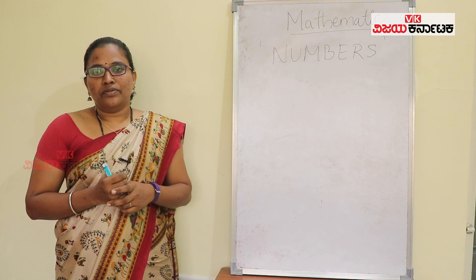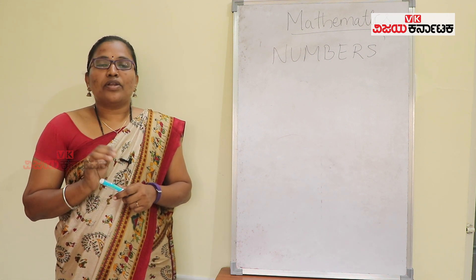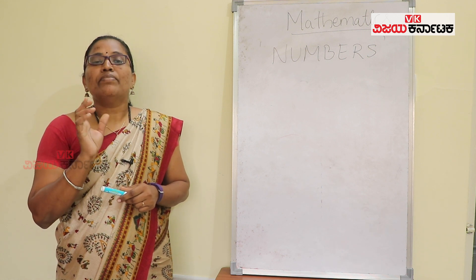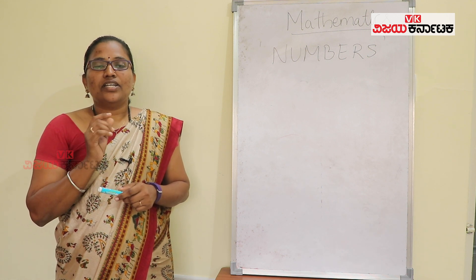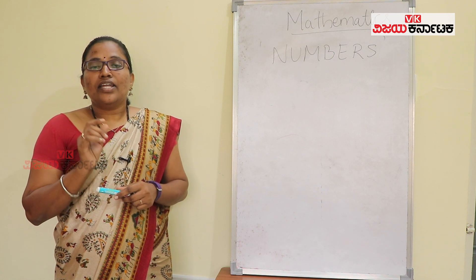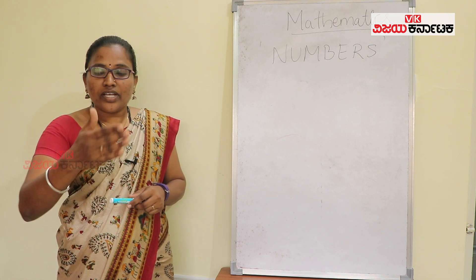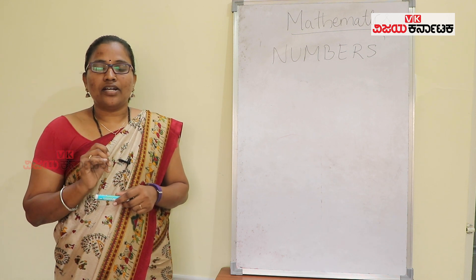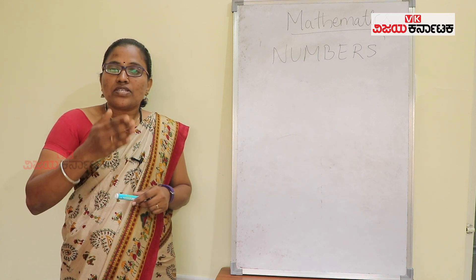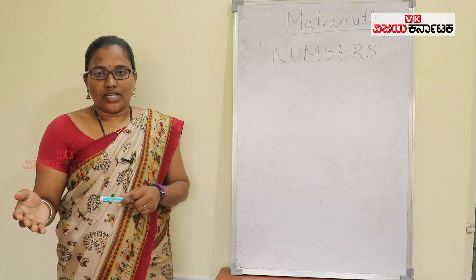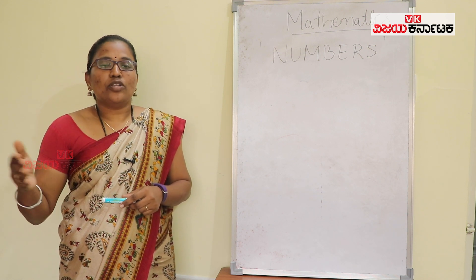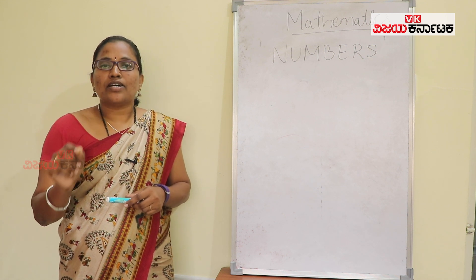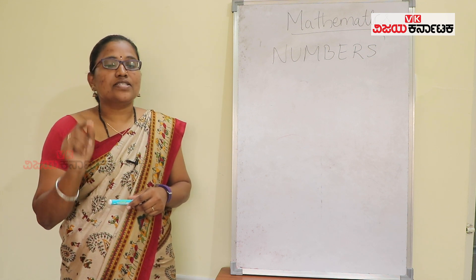Number one. So number one — we are talking about the name and symbol given. Actually, the meaning of a number is in the process of counting objects. We are talking about one or two. So these are called the process of counting objects. In the process of counting objects, each counting will take some particular name or symbol.